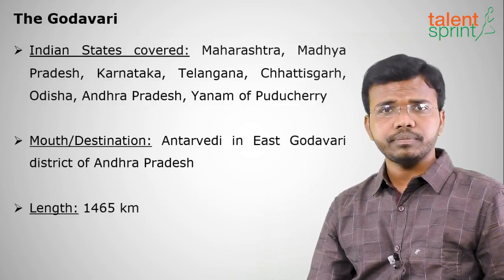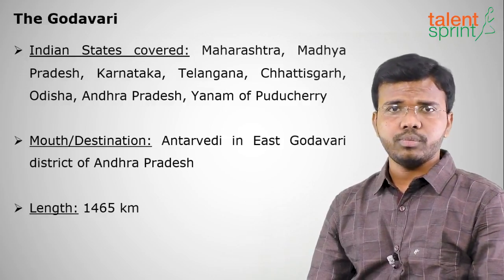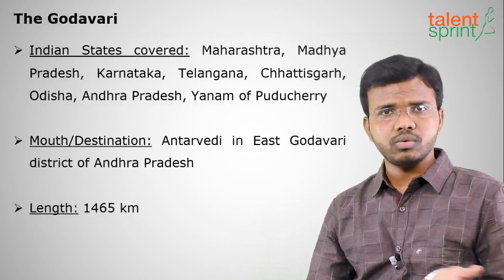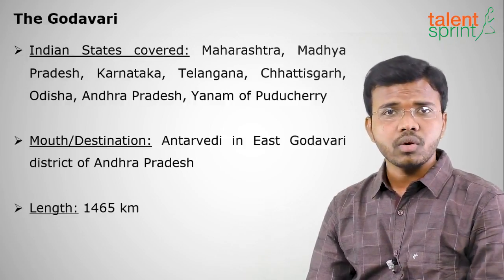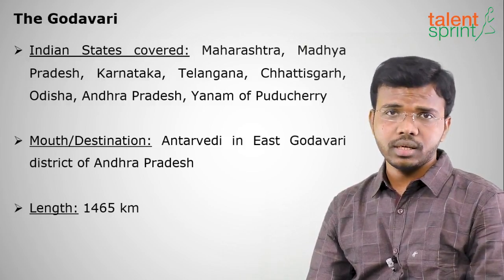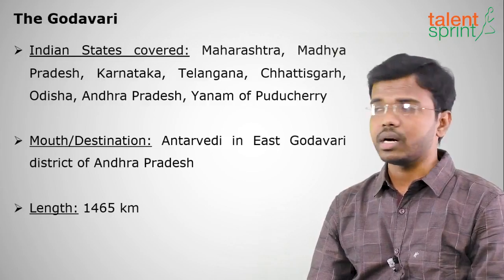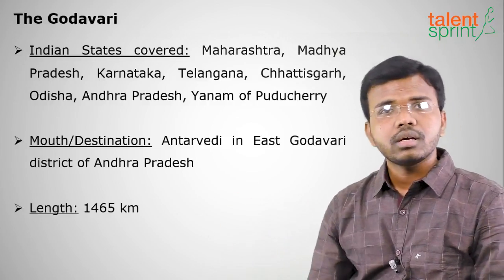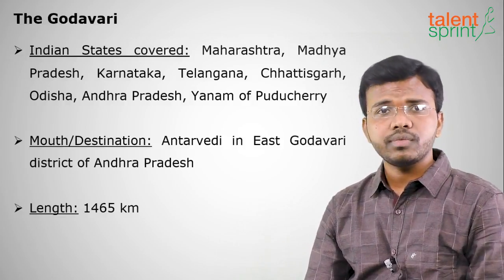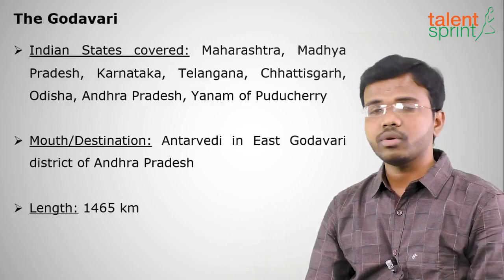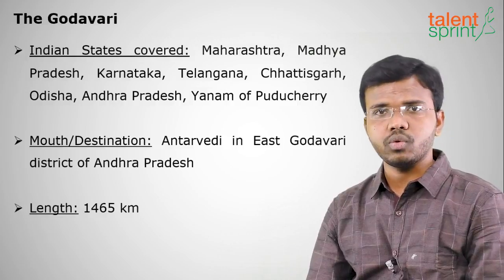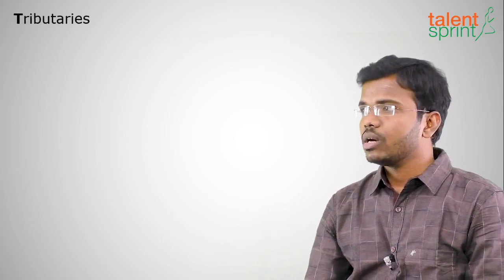States covered by the Godavari are Maharashtra, Telangana, Andhra Pradesh, Karnataka, Yanam of Puducherry, some parts of Odisha, and Chhattisgarh. The mouth or destination is at Antarvedi in East Godavari district of Andhra Pradesh, where it drains into the Bay of Bengal. The total length of the Godavari is around 1,465 kilometers.